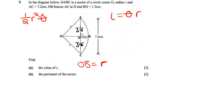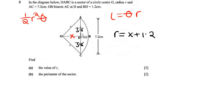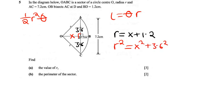OB is the radius, but we can express it in terms of OD and DB. So let OD be X. Then the radius is the same as X plus 1.2 — so we've used the 1.2 in our calculations. Now if we look at what I've done: I've put X there and 3.6 there, so we can come up with another equation using this triangle and Pythagoras theorem. We know this is 90°, so R² equals X² plus 3.6². We now have two equations.